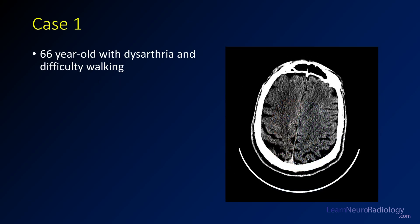So this case is a 66-year-old with dysarthria and difficulty walking. Here you see a single image from a head CT, kind of in the center of semi-ovale, so above the level of the ventricles.